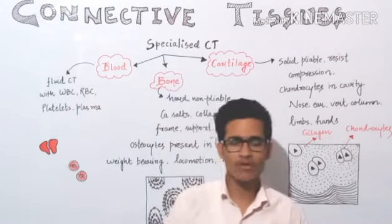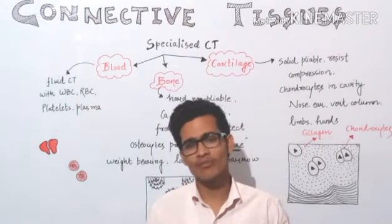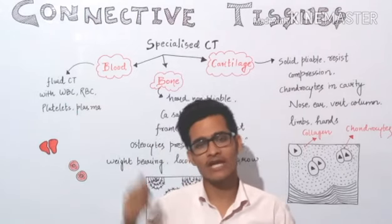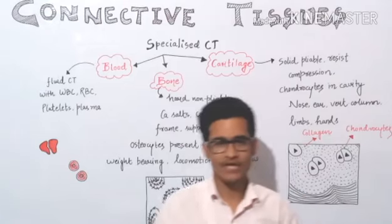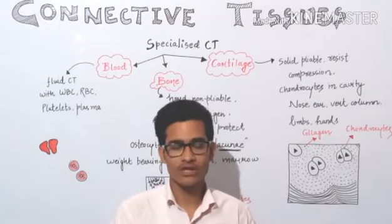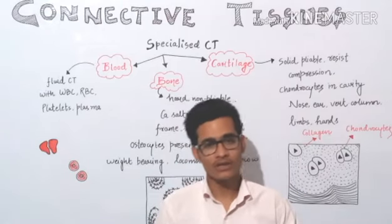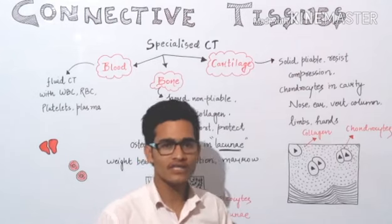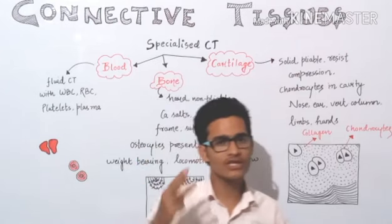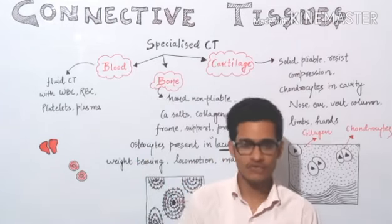So now let's talk about the properties of different examples of specialized connective tissue. There are many types — for example, blood, bones, and cartilage. These are the main specialized connective tissues.